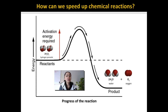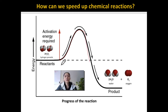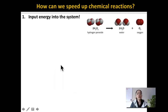So how can we speed up a chemical reaction? One thing we could do is just input a large amount of energy into the system. If you input energy — for example, heat it up — you could actually input enough energy for hydrogen peroxide to change into water and oxygen. Heat is one way to input energy into the system.